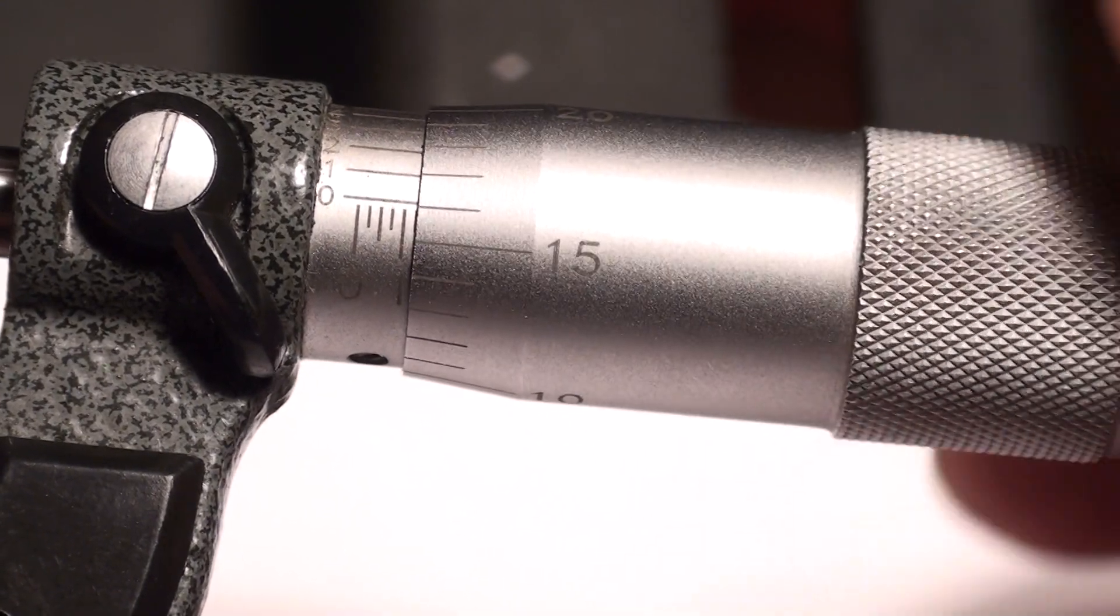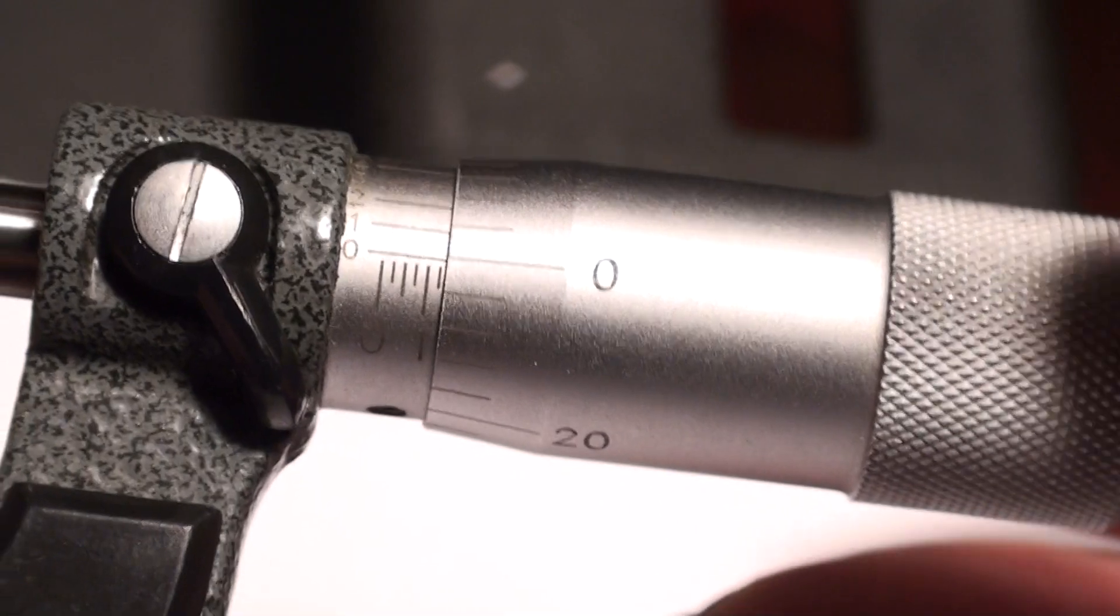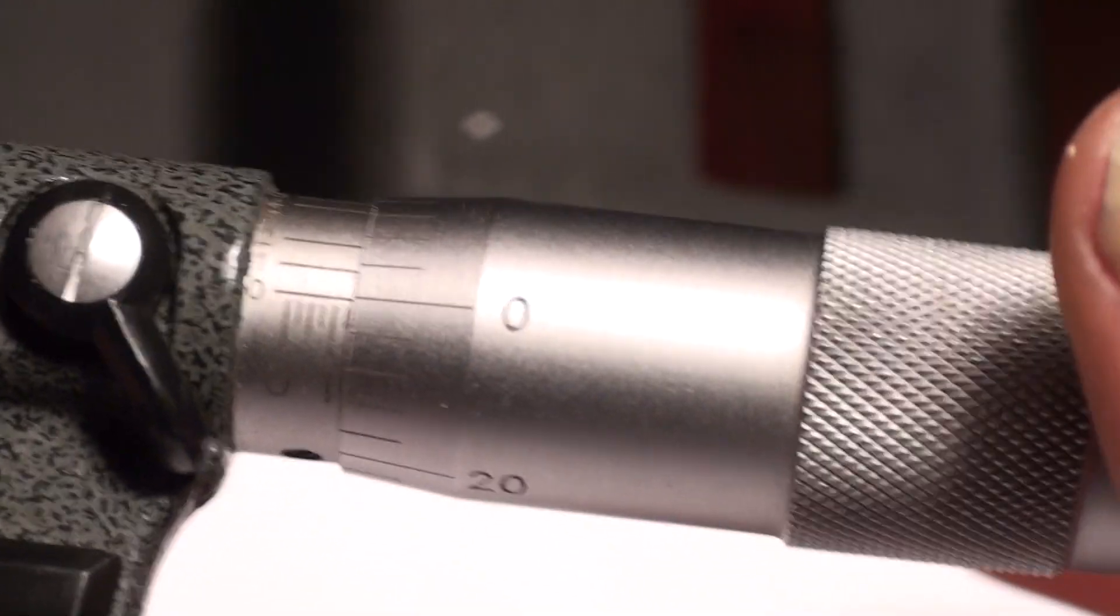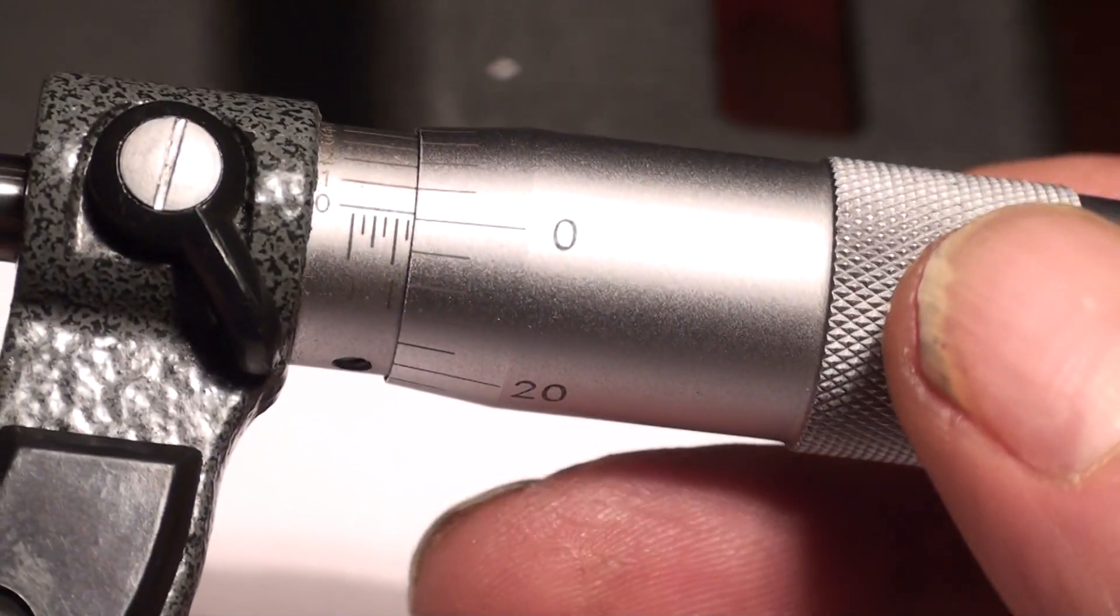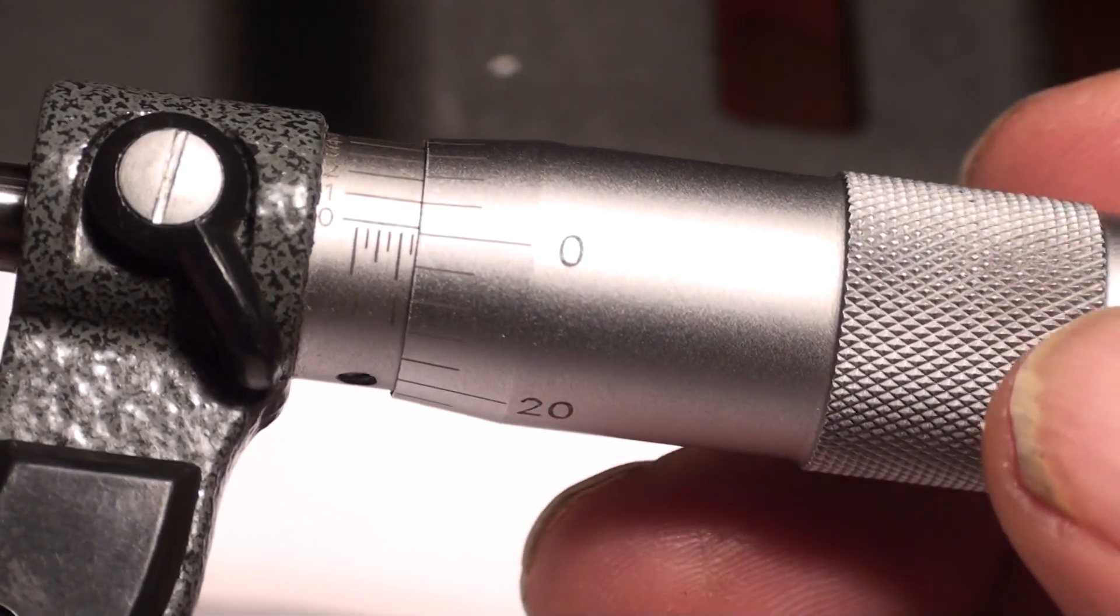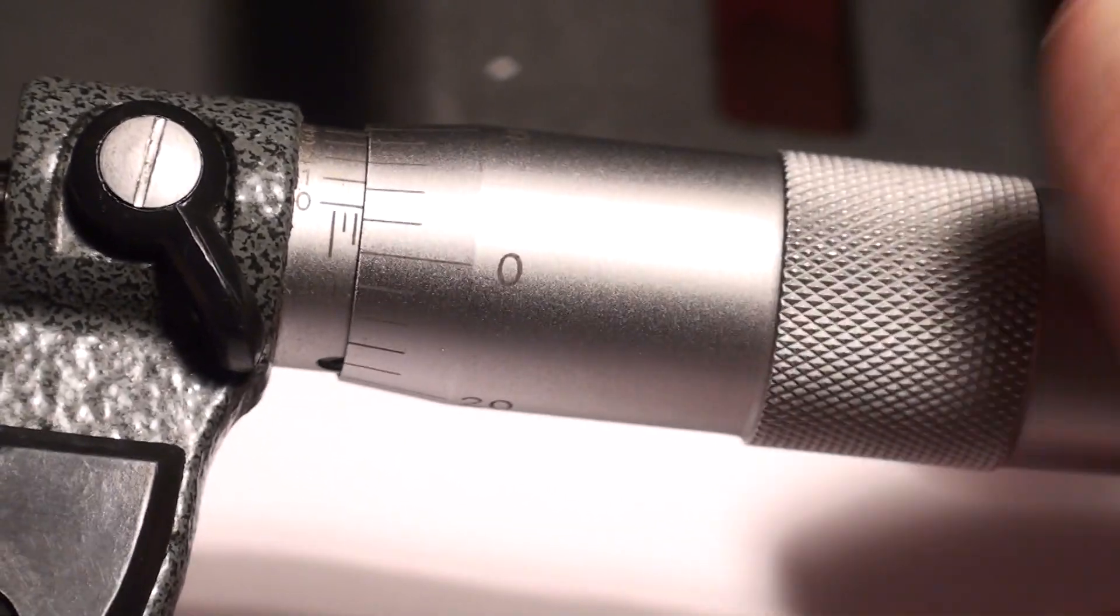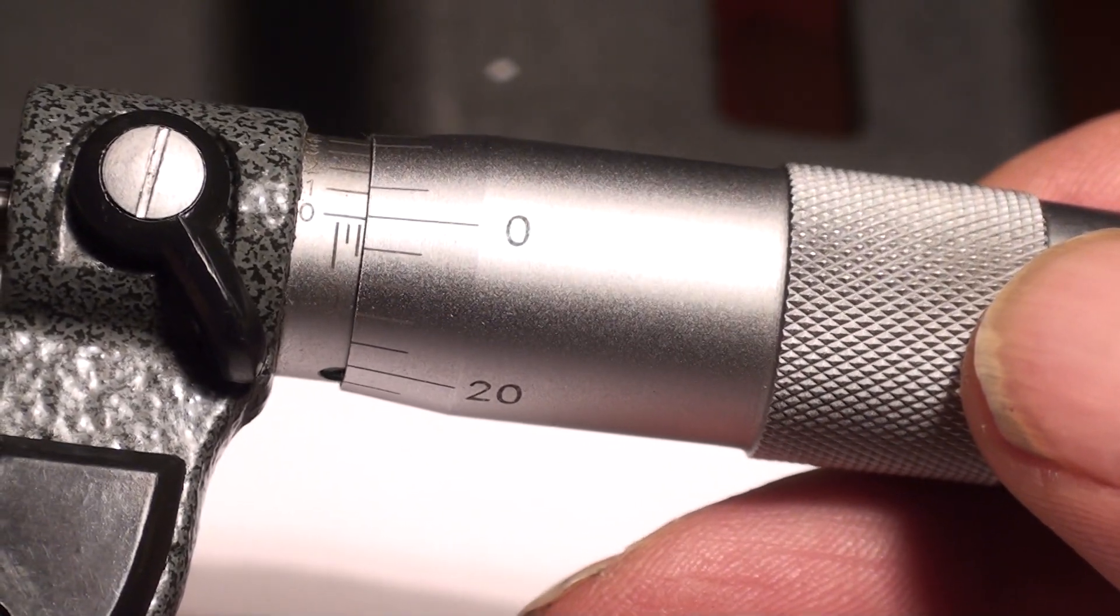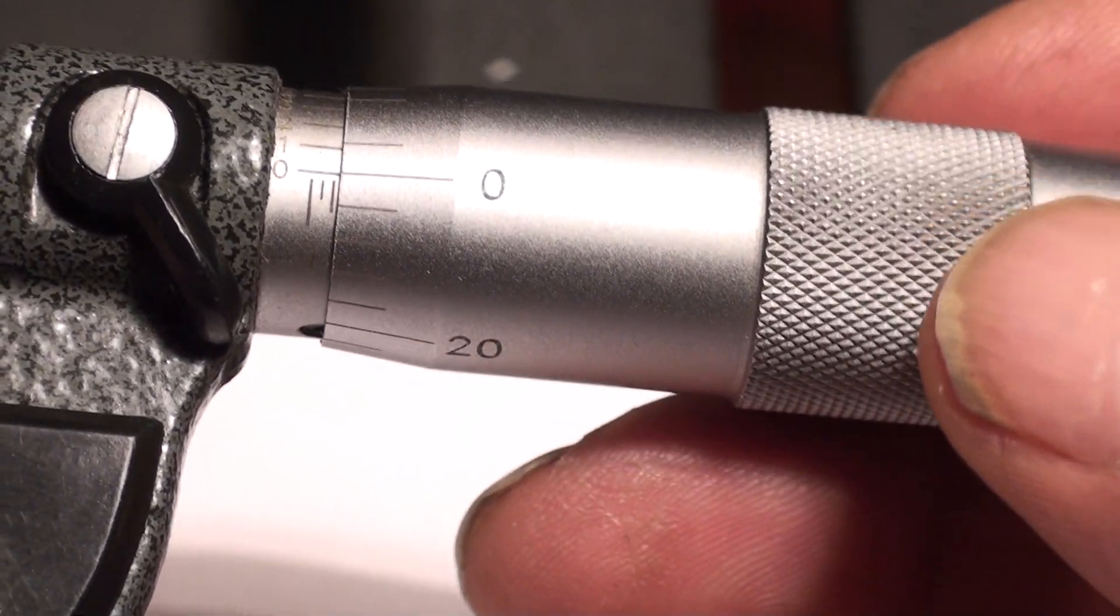Plus twenty-five would be written as point zero one two five. That's one hundred and twenty-five thousandths of an inch. So every line, when the zero comes in, is twenty-five. The second line would be fifty. It's so simple.